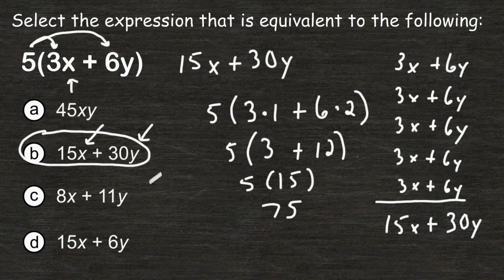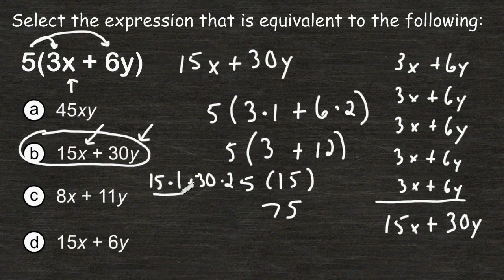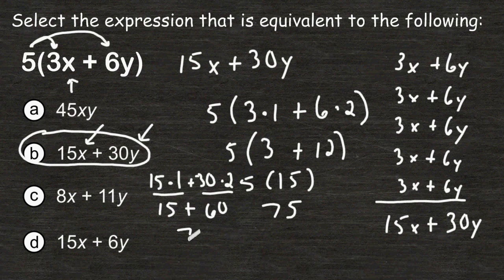So once again, I'm going to plug 1 in for the letter x. So 15 times 1 plus 30 times 2. So 15 times 1 is 15 and we have to add that to the product of 30 and 2 which is 60. And 15 plus 60 is equal to 75.